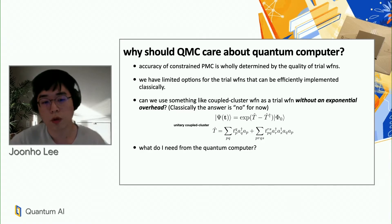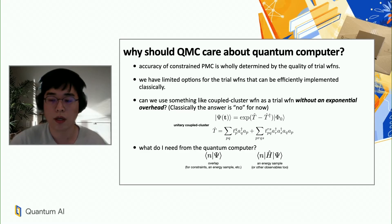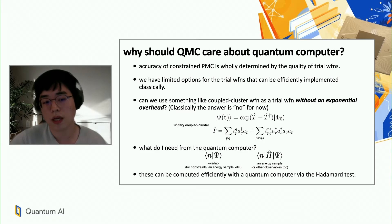So what do I need from the quantum computer? Well, I need an overlap wave function, overlap between two wave functions, so phi wave function and psi wave function. This is necessary to impose the constraints and also compute an estimate of the energy sample. And I also need a Hamiltonian matrix element, which is also used to compute an energy sample. And we all know that these can be computed efficiently with the quantum computer via the Hadamard test.